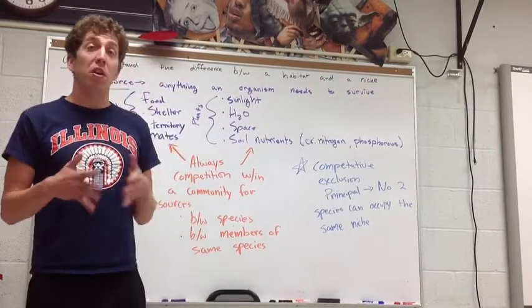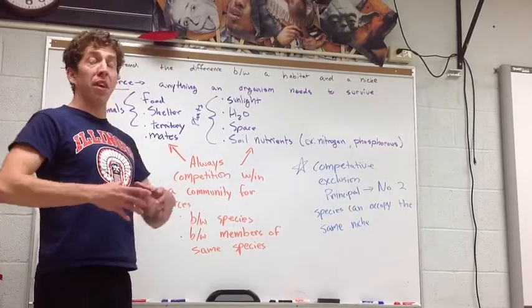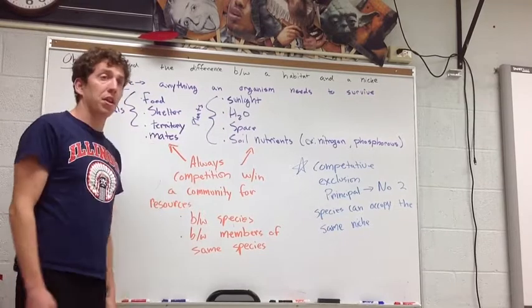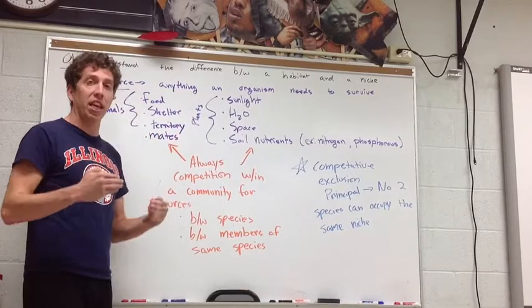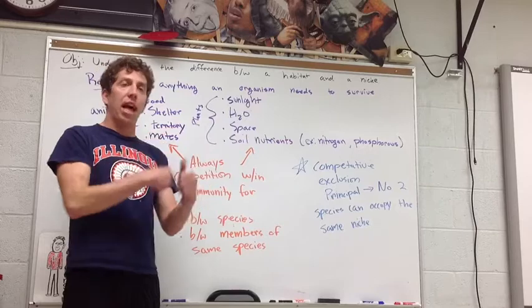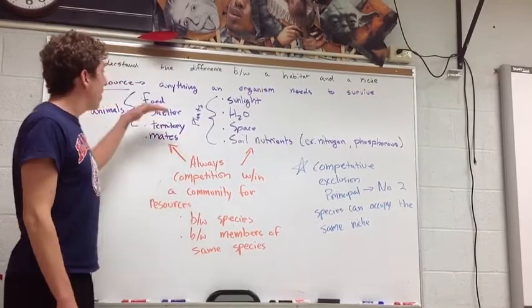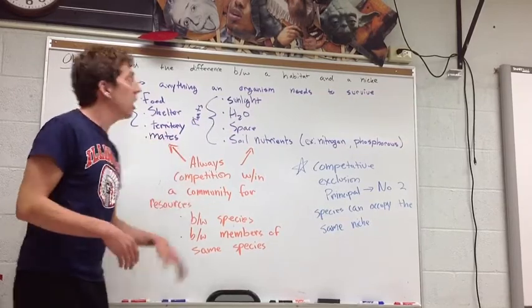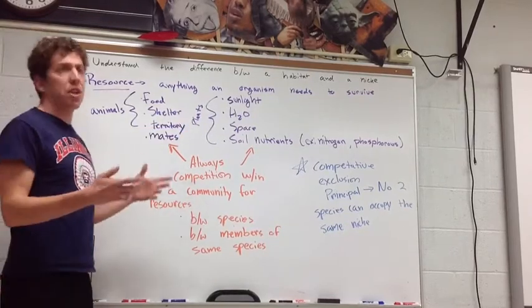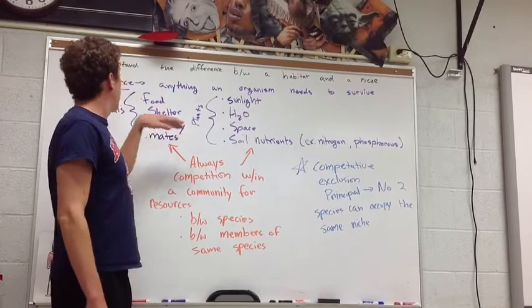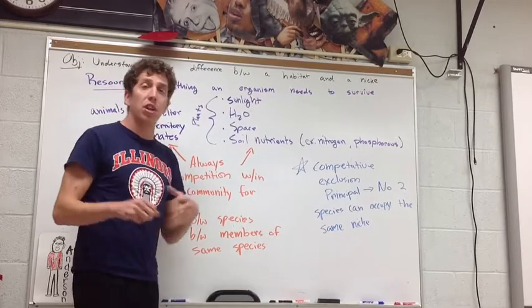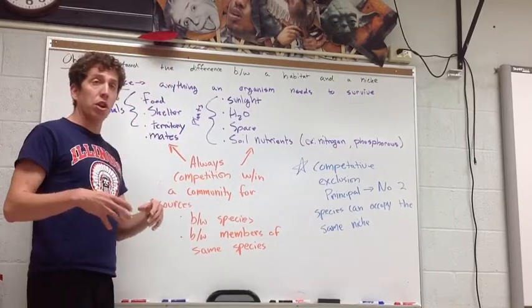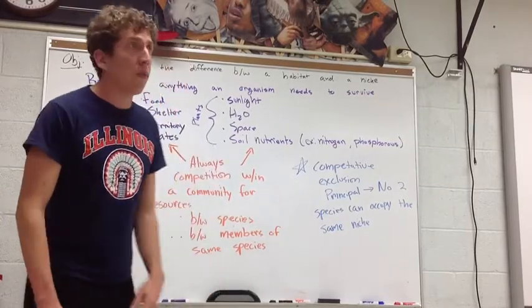Some other things we need to talk about with niches are resources. A resource is something specific an organism needs in order to survive, and these are all part of its niche. Think of it like a grocery list — you need flour, eggs, milk, and butter to make a cake; similarly, resources are what an animal needs to survive. For a plant, that's sunlight, water, space, and nutrients from the soil like nitrogen and phosphorus. For an animal, you need food, shelter, territory, and access to mates.